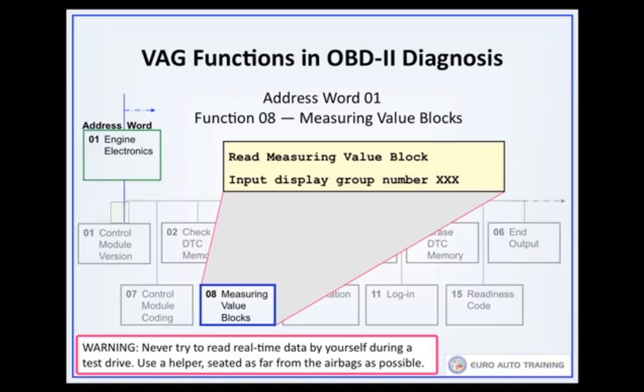Note that a display group number is always entered as three digits, shown here in the prompt as xxxx. Display group 5, for example, is entered using digits 0, 0, and 5.